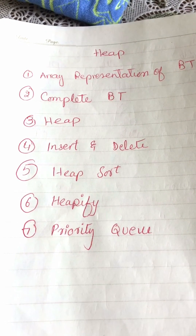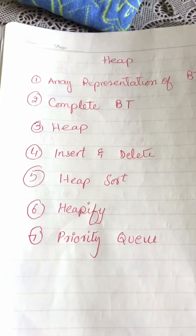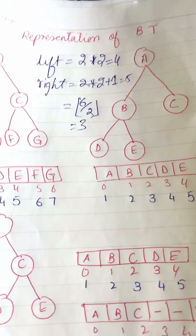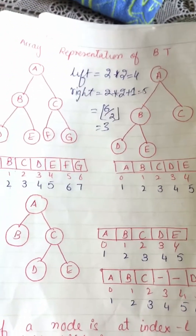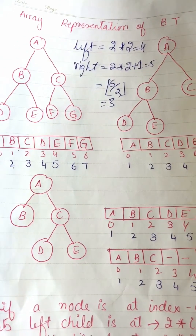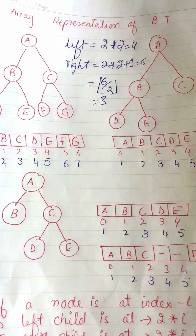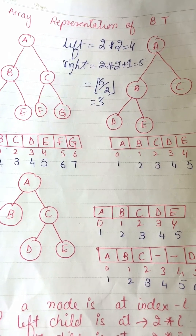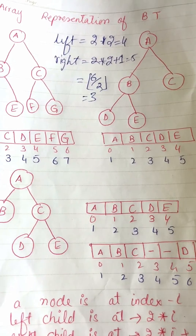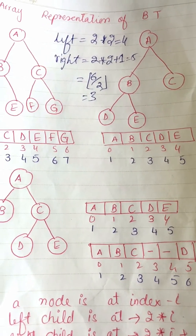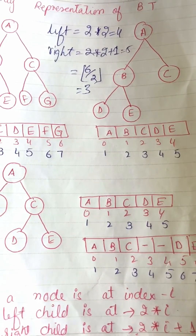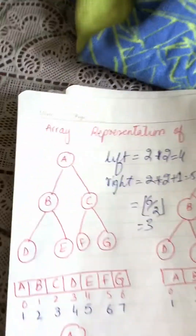Array representation of binary tree is the first topic. For storing a binary tree in an array we have to take care of two things: the elements, and their relationships. The relationship means who is the parent, who is the child, which one is the left child and which is the right child. We have to preserve these relationships.